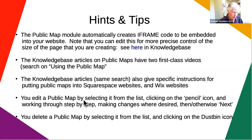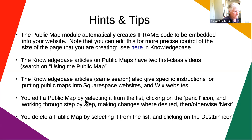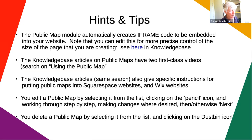If you want to edit your public map — perhaps people are asking for additional features — go back to your administration page, select the public map by clicking on it, click on the pencil icon, and then run through exactly the same steps, making changes where desired. If there are no changes, just click next and move on to the next screen. If you're tired of a map and want to get rid of it, same system: go to the administration page, select the map, click on the dustbin, and you're done.